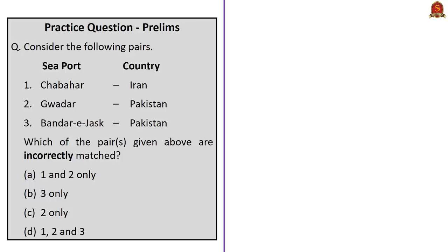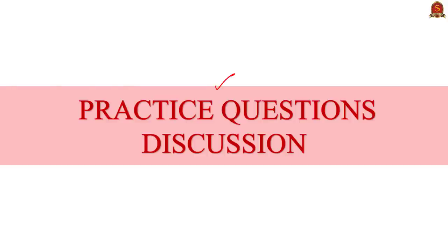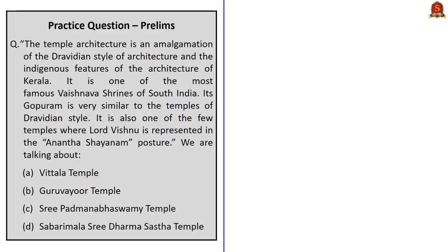From the map, Chabahar port and Bandar-e-Jask are located in Iran, whereas Gwadar port is located in Pakistan. So the correct answer for this question is option B: 3 only. Now let's take a practice question session regarding temple architecture.